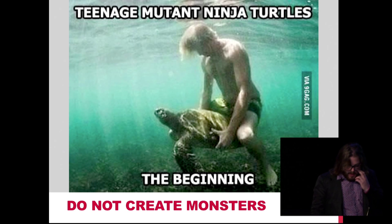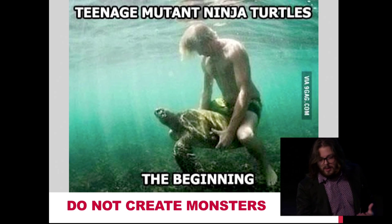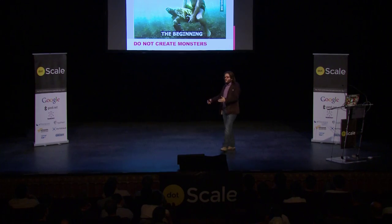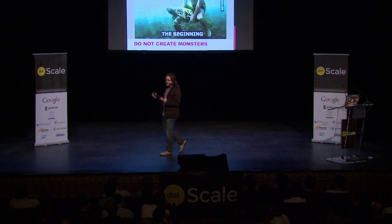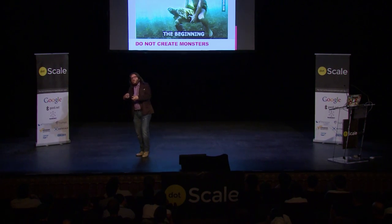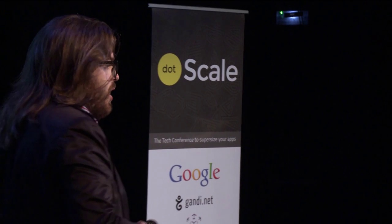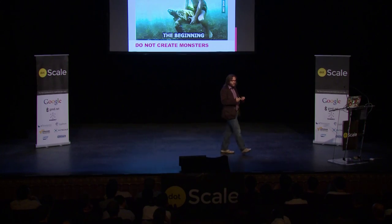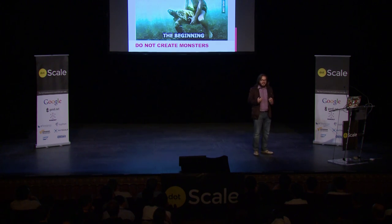Don't make monsters. For example of monsters, we have a lot of things — this is not a good idea — like making a job queue with MySQL and Cron. It's a monster, it's a mutant. If you take a technology and force it to make something else beyond what it's designed to do, you will have ops problems. It will work on your computer, but it won't work when you scale. Choose your technology wisely for what it was built to do.